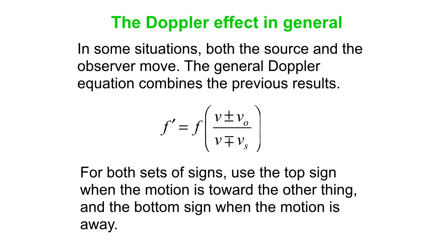And again, note that the signs are written in a very particular order here, right? Plus or minus on the top in the numerator and minus or plus on the bottom in the denominator. For both sets, use the top sign when the motion is toward and the bottom sign when the motion is away.